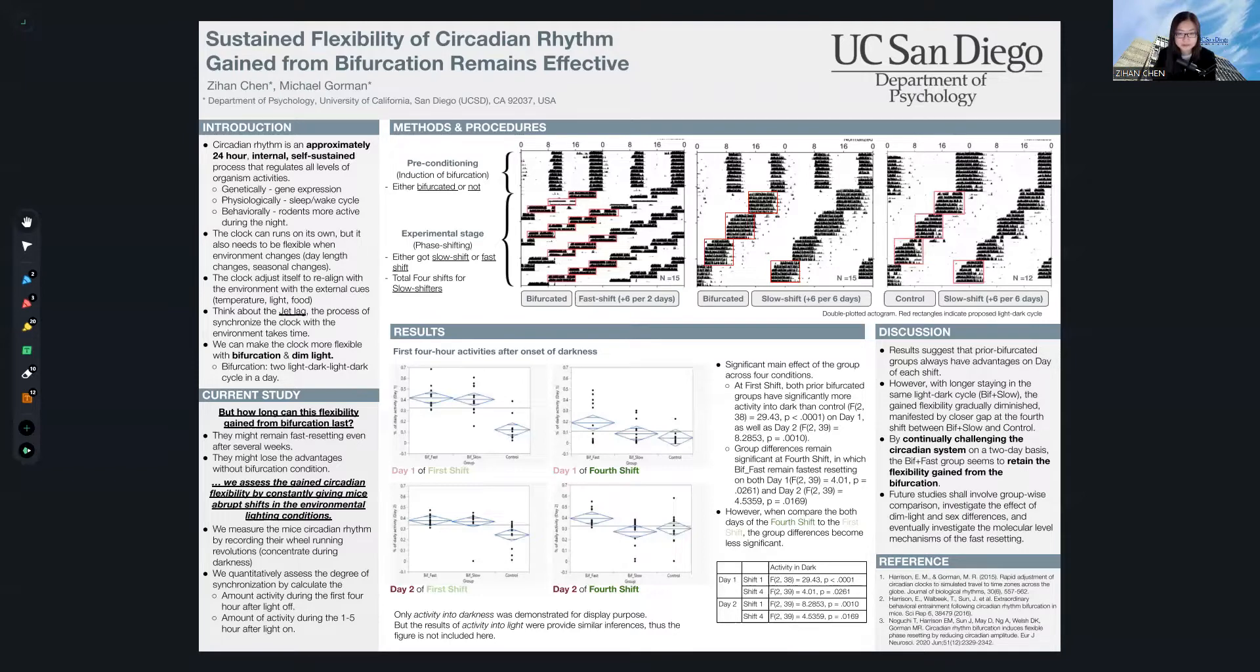One of the behavioral outcomes we measured is the amount of activity during the first four hours after the lights off. Activity is recorded as the mice wheel running revolutions with a sensor attached to the cage. Because the mice are nocturnal animals, they are expected to be active during the night. Therefore, faster adaptation or better entrainment means higher first four-hour activity concentrations after the onset of darkness.